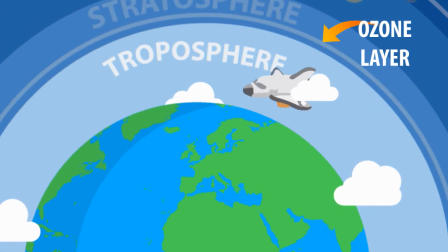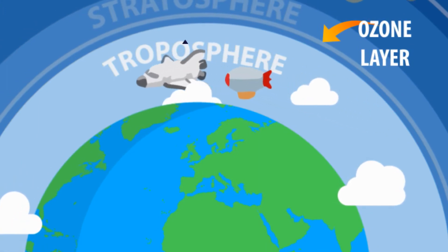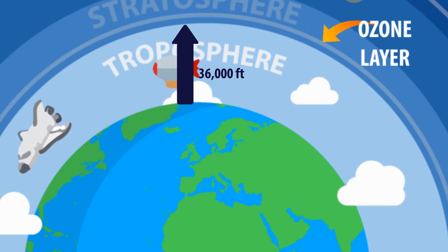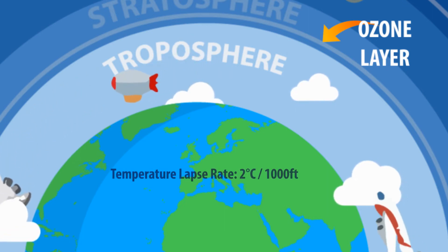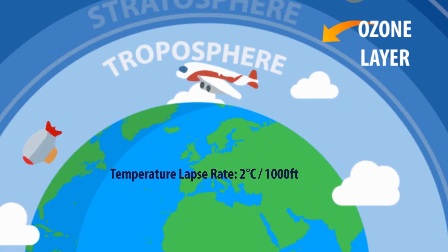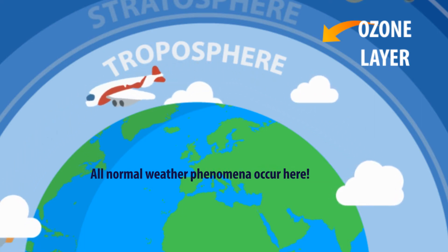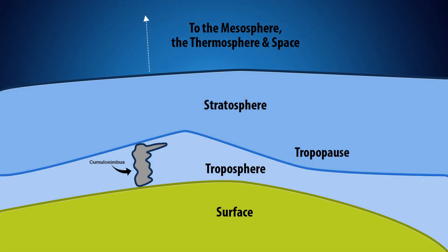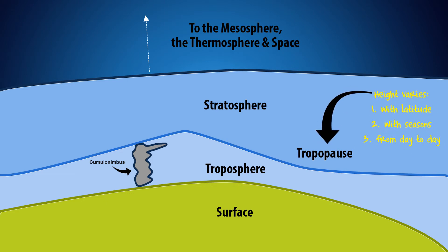Welcome to the troposphere. It extends from the Earth's surface to an average height of 36,000 feet. There is a temperature lapse rate of 2 degrees Celsius per 1,000 feet. All normal weather phenomena occur here. The tropopause is the upper boundary of the troposphere, and clear air turbulence may be present near the tropopause. The height of the tropopause varies according to several conditions.